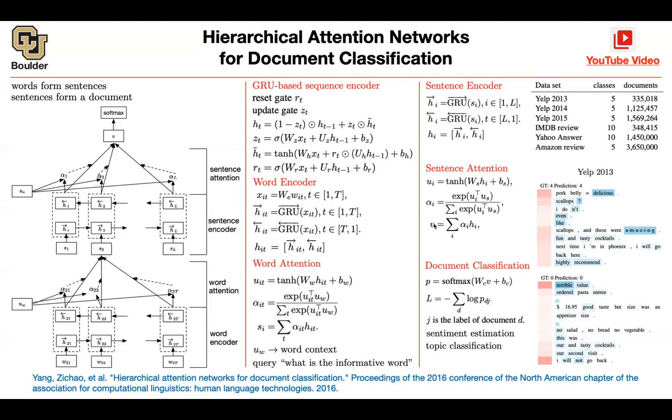And then the vector representation for the entire document is going to end up being a linear combination of these alpha I's. And this is interesting. A different document, if a different document goes in, these alphas are going to change differently. So these alphas are document dependent.